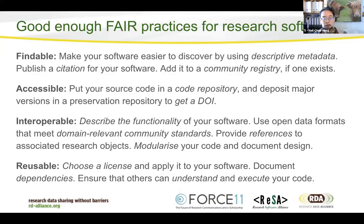To make your software accessible, put your source code in a code repository — something like GitHub is a good choice. Then deposit major versions in a preservation repository. If you're publishing something to be shared or related to a paper, make sure it goes into your institution's digital repository or into something like Zenodo or Figshare to get a DOI. Make it interoperable by describing the functionality of your software, using open data formats that meet domain-relevant community standards, providing references to other research objects like papers and datasets, and modularizing your code and documenting its design so people understand how to connect it to other things.